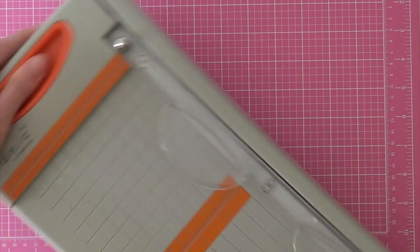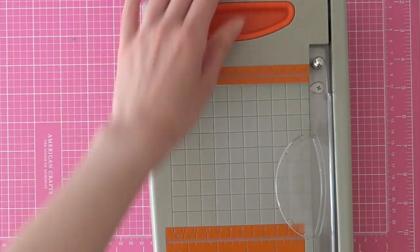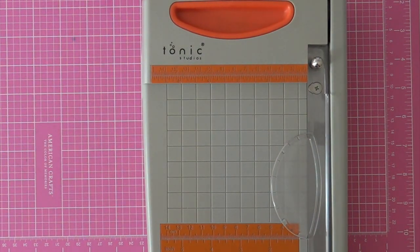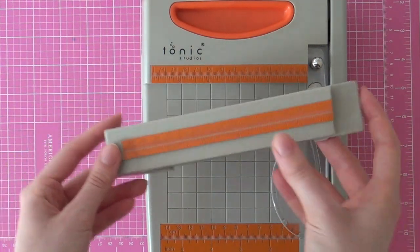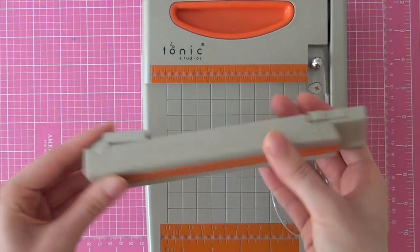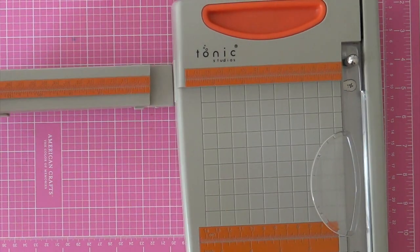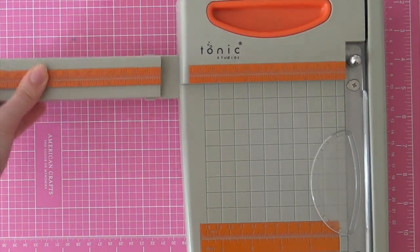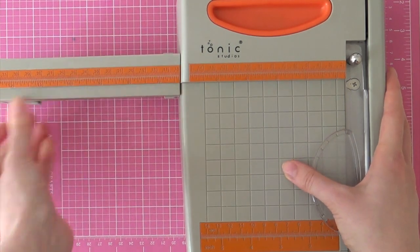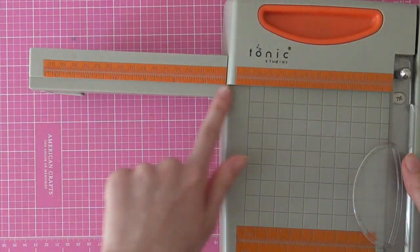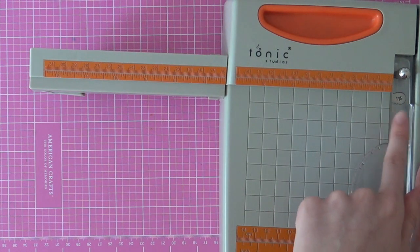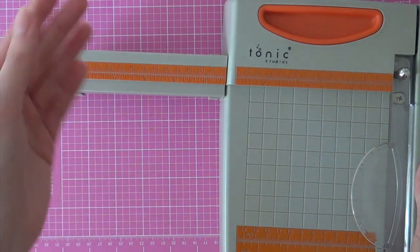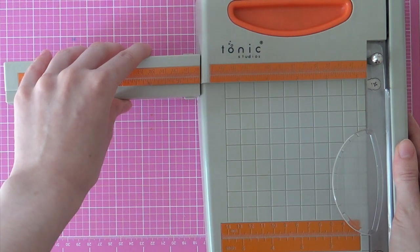So it measures 12 by 12 if you attach the detachable measuring bar. So you can just easily pop this in over here and then you have your full cutting surface. So now the trimmer measures 12 by 12 and since this arm is detachable it's really easy to store this trimmer.